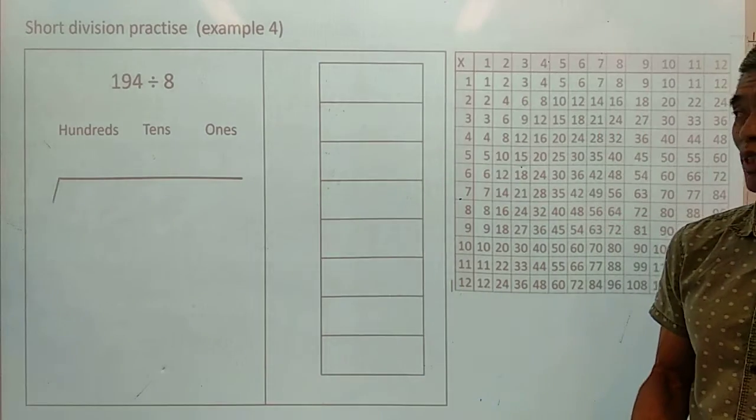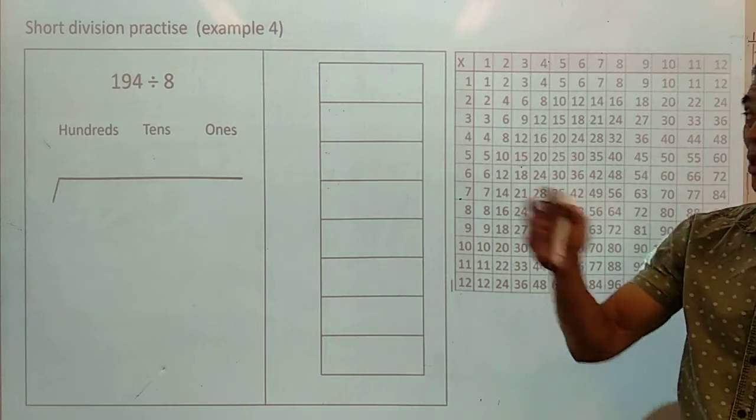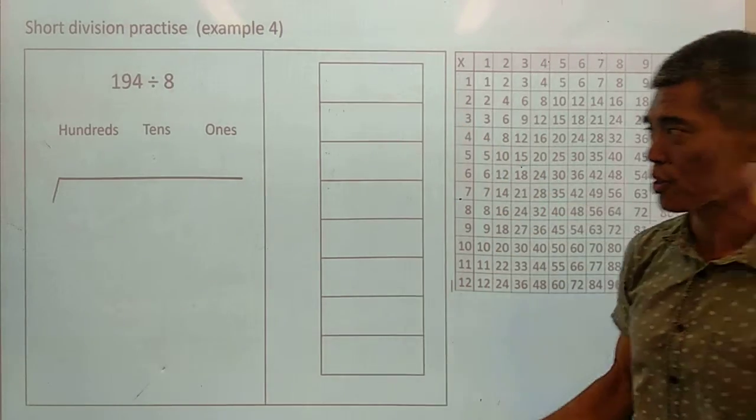Example 4. 194 divided by 8. We're going to split the 194 equally among 8 boxes.